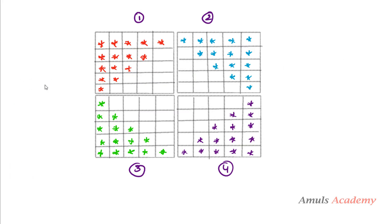If we combine 4 patterns together we will get today's pattern. First we will write the code for pattern 1, next pattern 2, next 3, next 4, then we will combine them to get our today's pattern.